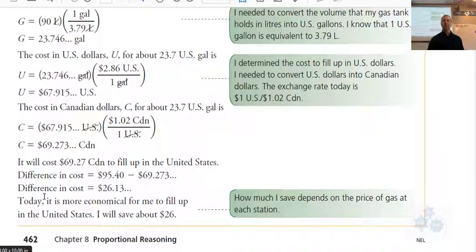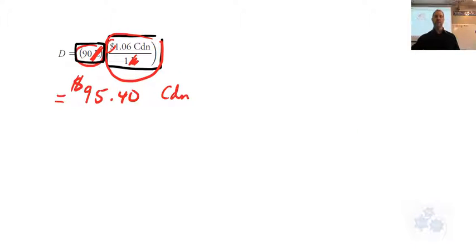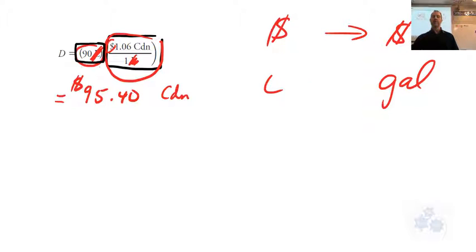So when it's all said and done, we have to convert the dollars to make sure that those are the same, comparing them to the same dollar. And the volume, we have to make sure we're converting them to the same. So, it's going to cost $69 Canadian to fill up in the U.S. The difference in cost here, this is in Canada. This is in the U.S. It's going to be about $26. So today, it's more economical to fill up in the U.S. You save about $26.